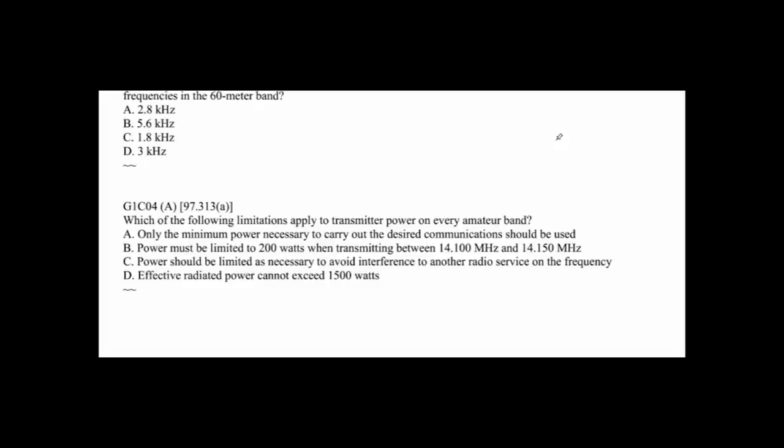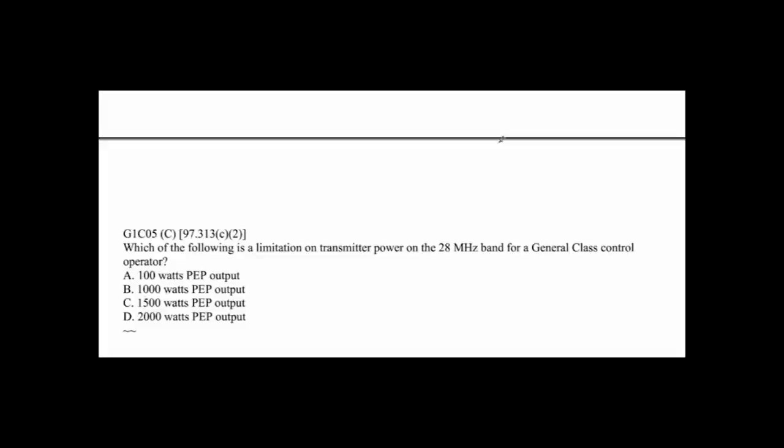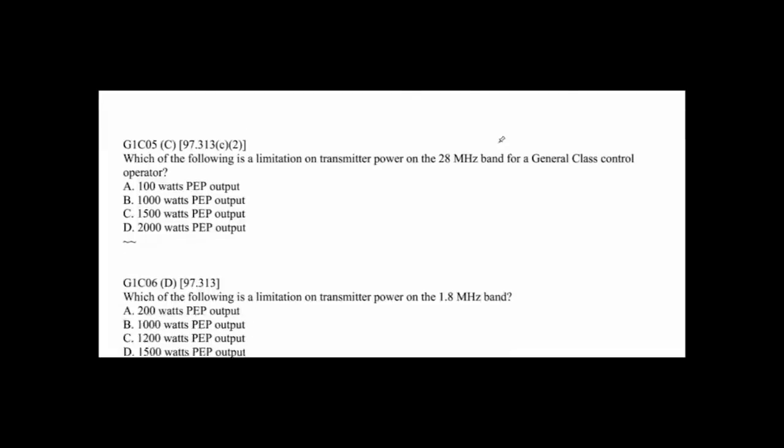G1C04: Which of the following limitations applies to the transmitter power on every amateur band? The answer is A — only the minimum power necessary to carry out the desired communications should be used. That's a question and answer that's been around forever. You're supposed to use the minimum power necessary to complete the communications. G1C05: Which of the following is a limitation on transmitter power on the 28 MHz band for a general class control operator? That's full power — C, 1500 watts PEP. G1C06: Which of the following is a limitation on transmitter power on the 1.8 MHz band, or 160 meters? The answer is again 1500 watts PEP.